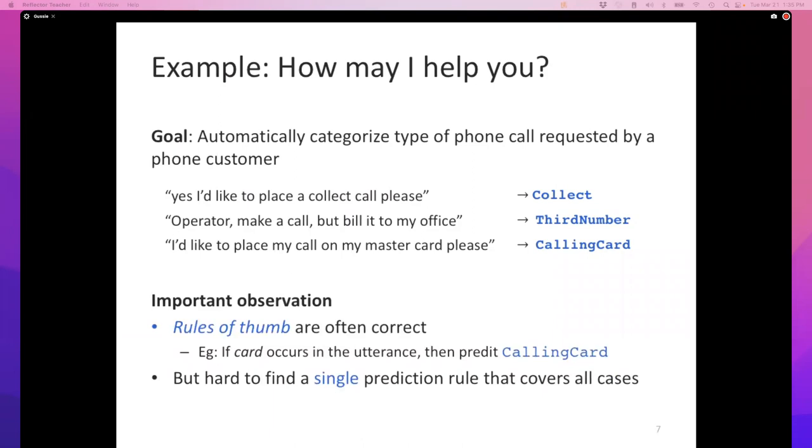It may seem like this is an easy problem to solve. I can detect certain words. If the word "card" shows up in the utterance, then there's a weak correlation between that and calling card.